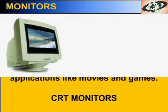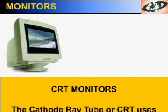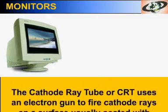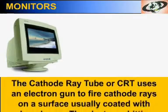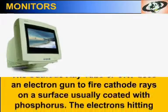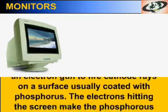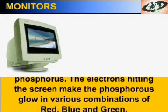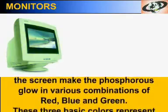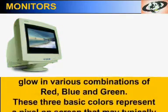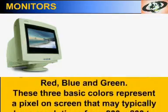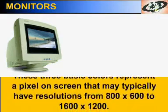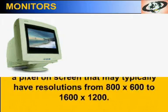The cathode ray tube, or CRT, uses an electron gun to fire cathode rays onto a surface which is usually coated with phosphorus. The electrons hitting the screen make the phosphorus glow in various combinations of red, blue and green. These three basic colors represent a pixel on screen that may typically have resolutions from 800x600 to 1600x1200 pixels.